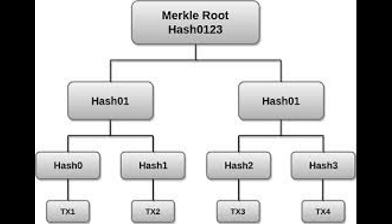Here comes the data, outcomes 256. Merkle trees. Hash value 32 bits. Merkle trees. Here comes the data, outcomes 256.